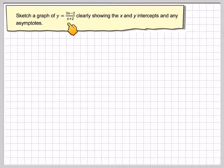Sketch a graph of y equals 3x minus 2 divided by x plus 2, clearly showing the x and y intercepts and any asymptotes.